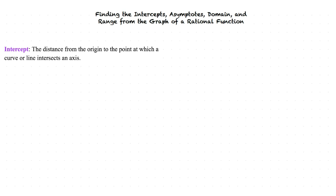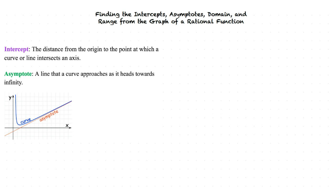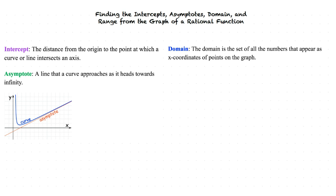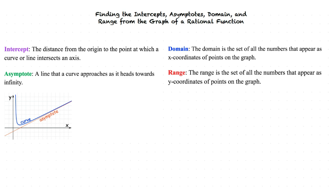Before we begin, let's take a quick moment to review some terminology. An intercept is the distance from the origin to the point at which a curve or line intersects an axis. An asymptote is a line that a curve approaches as it heads towards infinity. In this image, our asymptote is depicted by the red dashed line. The domain is the set of all the numbers that appear as x-coordinates of points on the graph, and the range is the set of all the numbers that appear as y-coordinates of points on the graph.